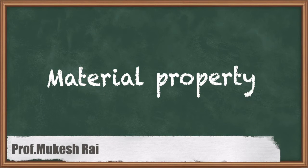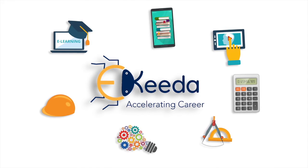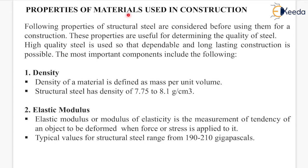Hello students. Today we are going to study material properties of structural steel. Properties of materials used in construction — the following properties of structural steel are considered before using them for construction. These properties are useful for determining the quality of steel. High quality steel is used so that dependable and long-lasting construction is possible.